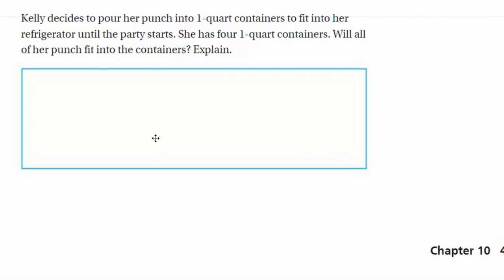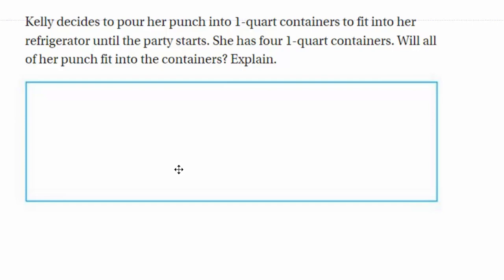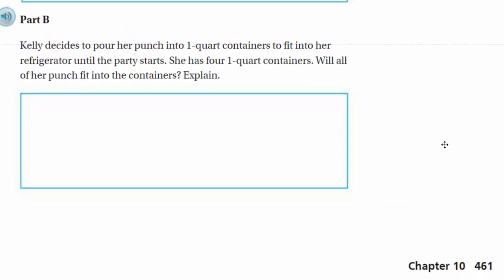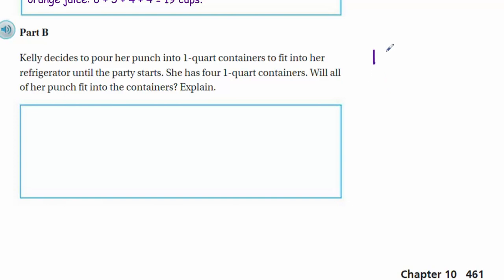Part B. It says that Kelly decides to pour her punch into 1 quart containers to fit into her refrigerator until the party starts. She has 4 1 quart containers. Will all of her punch fit into the containers? Explain. Hmm. Okay. Well, if she has 1 quart containers and we have 19 cups from the previous problem there. So, will it all fit? Well, we need to convert that 19 cups into quarts. Okay. So, let's take a look at this. Well, first thing that we need to do, we have 19 cups and she has 4 1 quart containers. Will all of her punch fit into those containers? Well, each quart, as we learned up above, was actually going to equal 2 pints, which in that case is going to equal 4 cups. We learned that so 1 quart is equal to 4 cups.